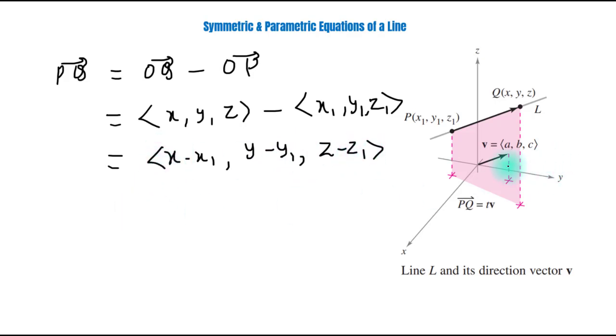Since vector v is parallel to PQ, hence we can write PQ equals some scalar quantity t times v, which is further equal to t times a, b, c.